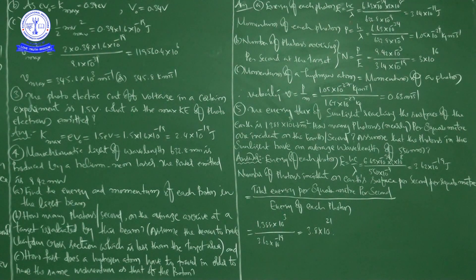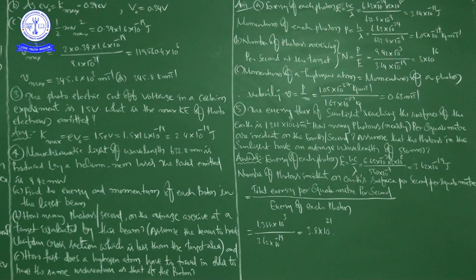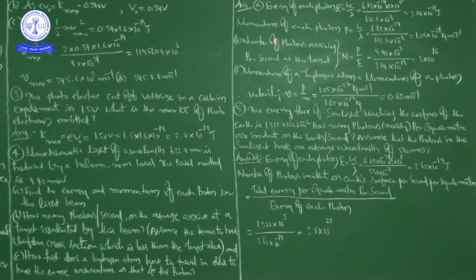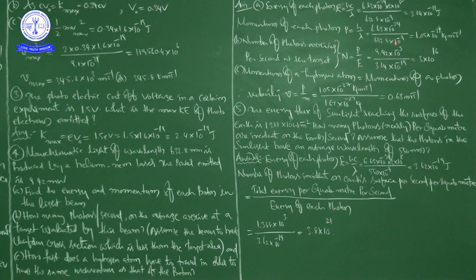For part A — energy of each photon: E = hc/λ. Taking SI units, this gives 3.14×10⁻¹⁹ joules. For momentum: p = h/λ = 6.63×10⁻³⁴ divided by 632.8×10⁻⁹ meters, giving p = 1.05×10⁻²⁷ kg·m/s. Part A is now complete.